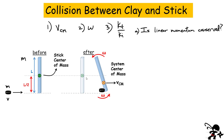First question: is linear momentum conserved? The first thing to consider is our system, which is made up of the puck plus the stick. You have to ask yourself: are there any external forces acting on the system? There are forces acting on the puck and on the stick, but that's it — no other external forces. So yes, linear momentum will be conserved in this collision.